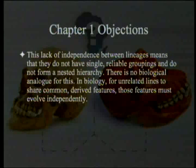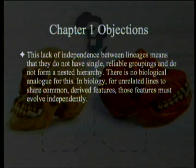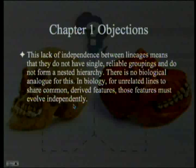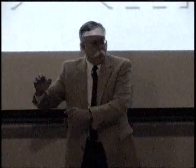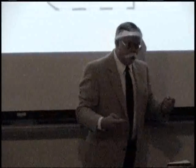But even if you ignore this particular point, I think there's something even more fundamental. This lack of independence between lineages means that they do not have single reliable groupings and do not form a nested hierarchy. Remember that — the key to proving evolution is a nested hierarchy. The converse of that is, if you don't have a nested hierarchy, you show evidence against common ancestry. Now, at this point he gets cold feet, because he'll say in biology, for unrelated lines to share common derived features, those features must evolve independently. So now we have an explanation for why the same thing might be in one clade and not in another closely related one, but in a third clade and not in a fourth. He's trying to say they're all a nested hierarchy except when they aren't.